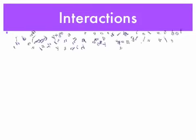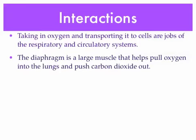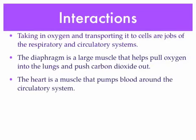Now let's talk about interactions between the skeletal and muscular system and the respiratory and circulatory system. Taking in oxygen and transporting it to cells are jobs of the respiratory and circulatory systems. The diaphragm, which is a large muscle, helps pull oxygen into the lungs and pushes carbon dioxide out — that's the connection between the muscular and respiratory systems. The heart is a muscle that pumps blood around the body, making it part of the circulatory system.